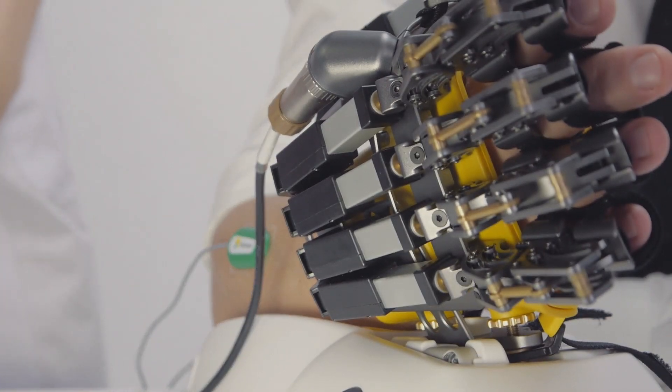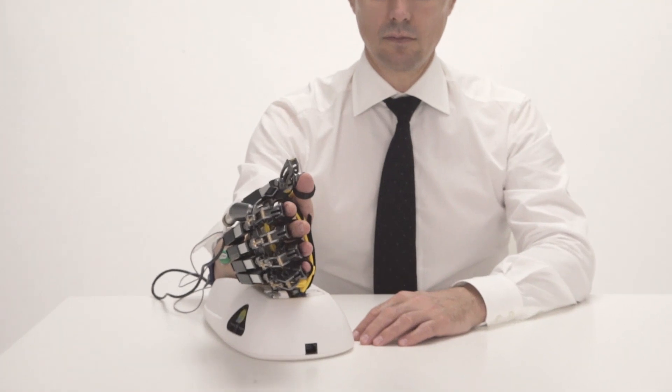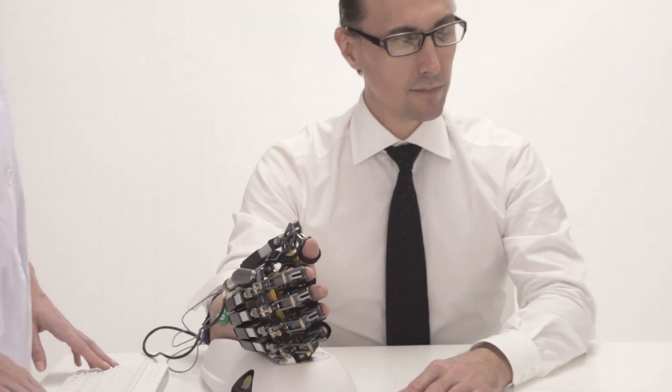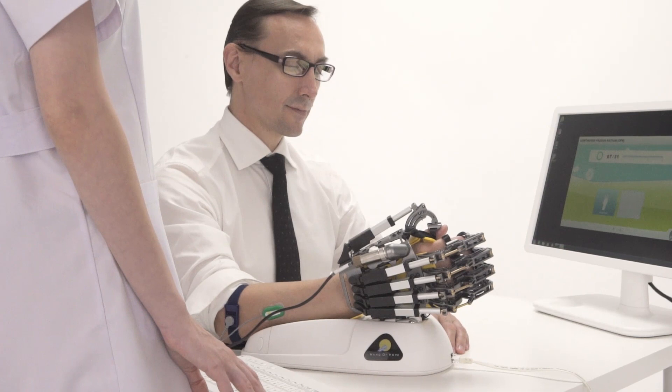Hand of Hope detects the patient's intentions to move the impaired hand. Voluntary EMG signals are commanded by the brain and detected by sensors.